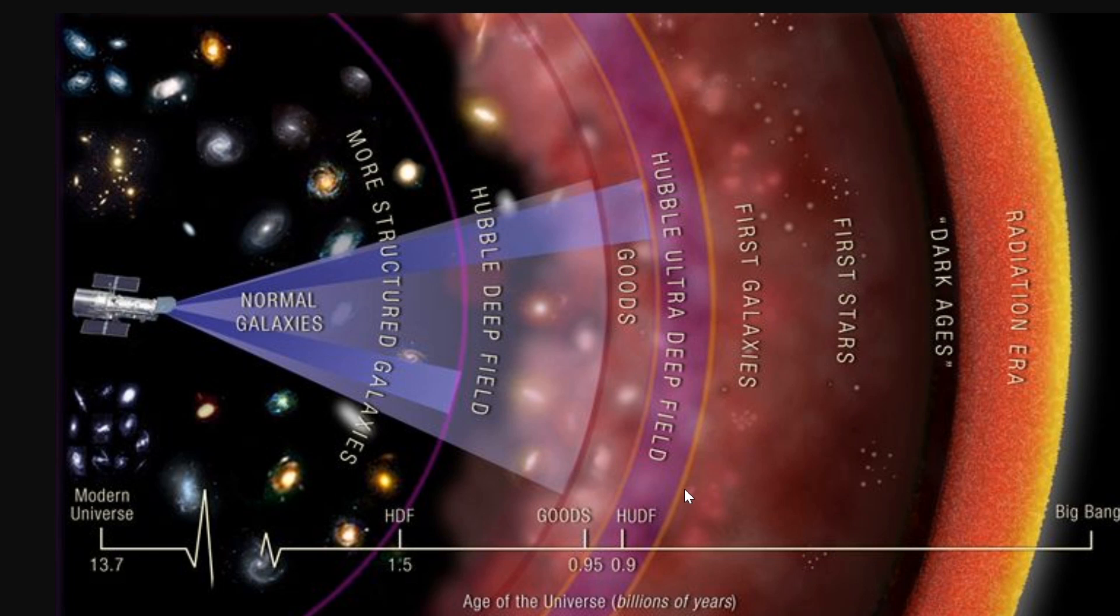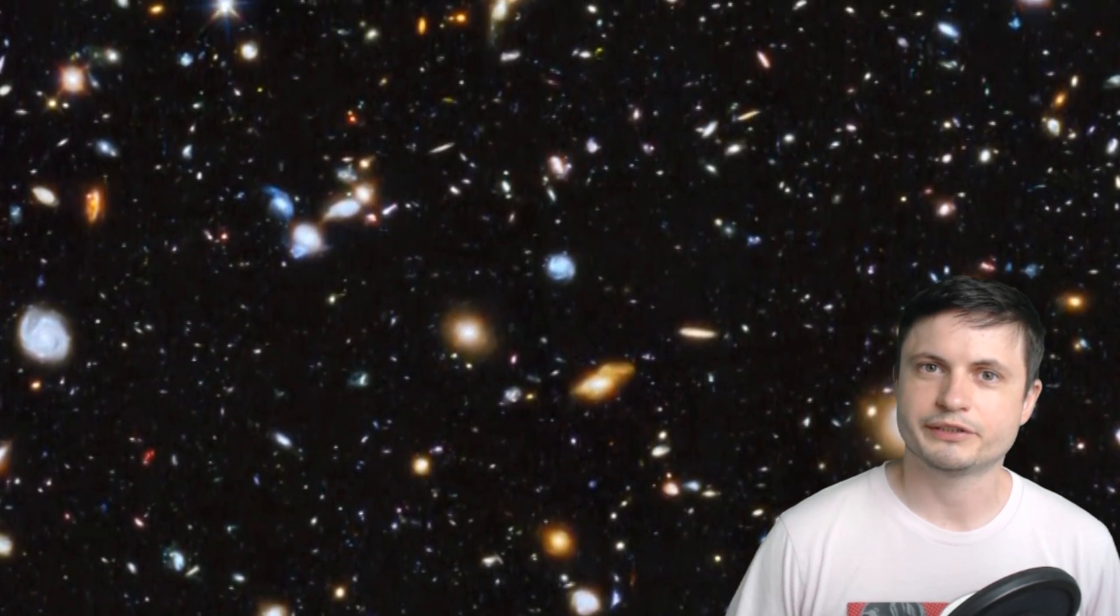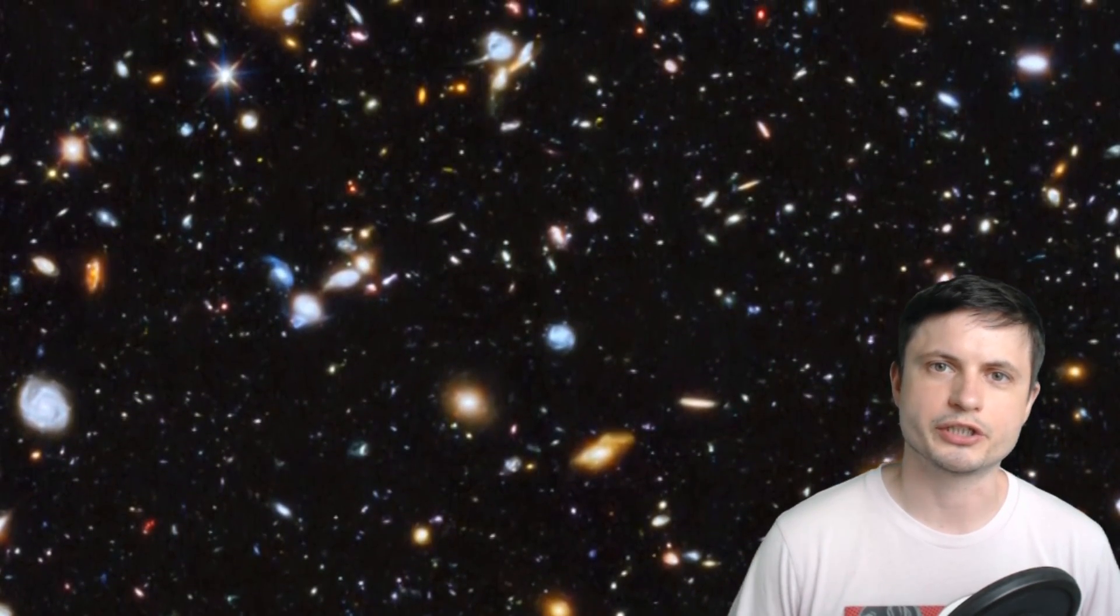And essentially they were looking into this part of the universe when the universe was only about 500 million years old. With the main purpose of course being discovering these early stars and trying to see if our theories on population 3 stars and reionization is correct. Well it turns out that they did not find the population 3 stars. There were no signs of any of these early stars in this early universe. Which of course means that the early universe itself is once again a lot more mysterious than we initially thought.